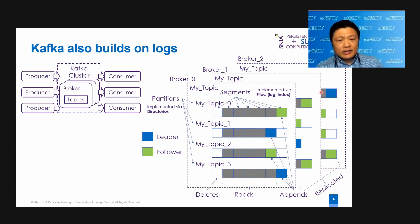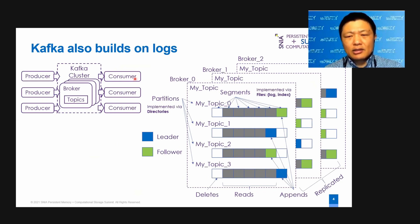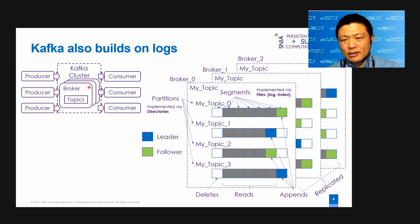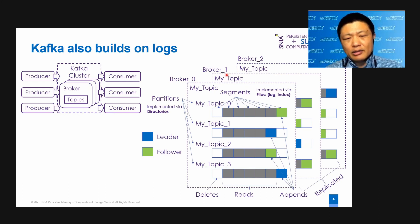Now let's take a look at Kafka. Kafka is a distributed streaming platform. A Kafka cluster allows producers to publish or write, and consumers to subscribe or read streams of events. The events are stored persistently and reliably by the storage layer called the broker. The stream of events are organized into topics. Let's take a topic as an example — which is "my topic." This topic is replicated among three brokers: broker 0, broker 1, and broker 2.